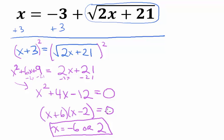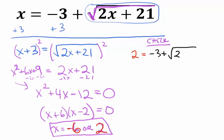You may be tempted to say 'phew, that was a long question, let's move on,' but another key idea with radical equations is you always have to check your answers. Let's start by checking x equals 2: does 2 equal negative 3 plus the square root of (2 times 2 plus 21)? That's negative 3 plus the square root of 25, which is negative 3 plus 5, which equals 2. Yes — so x equals 2 is a valid answer.